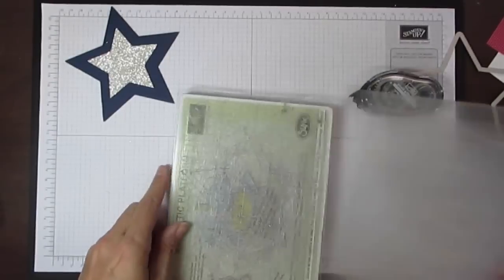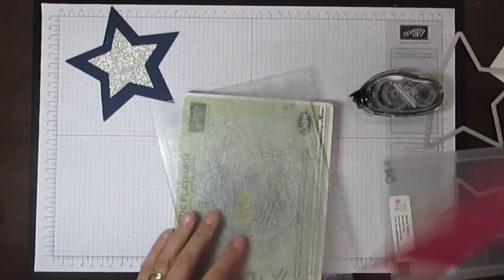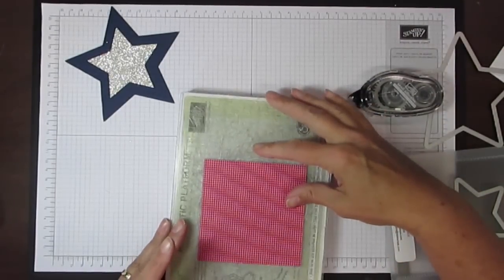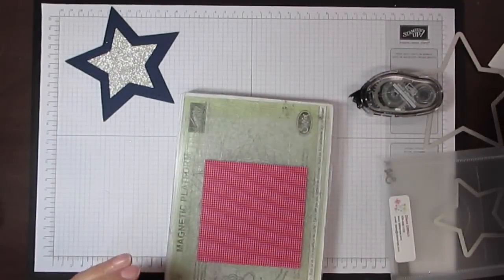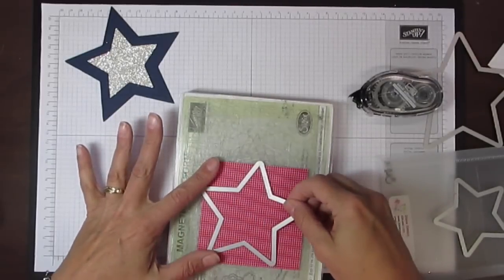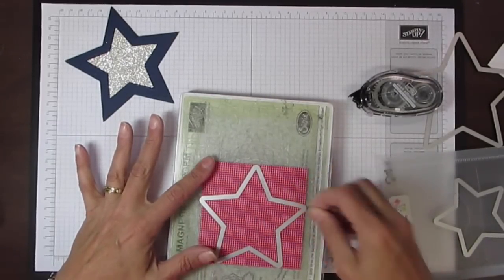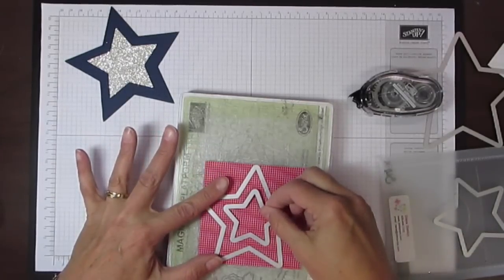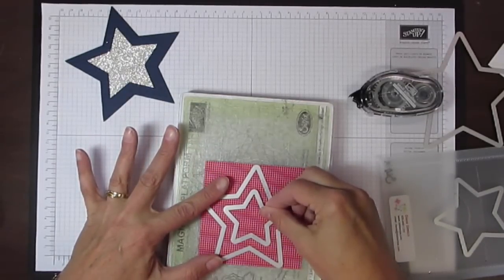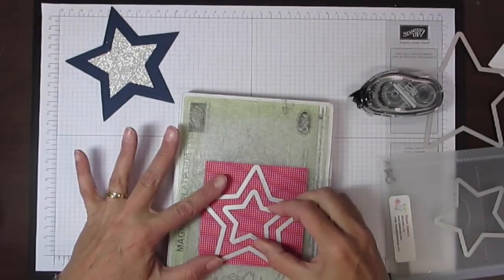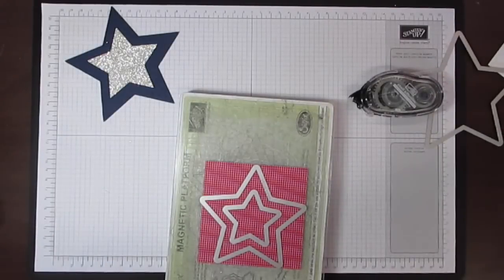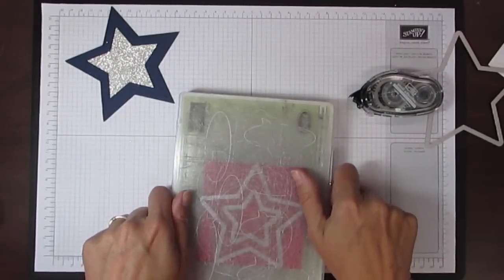The next thing I'm going to do is come back in with my magnetic plate, and this time I'm using a piece of designer series paper and the second to the largest star and the second to the smallest star. I'm just going to line those up on there, and it's easy with the magnetic plate because it's not moving, it's not going anywhere, and then run this through the big shot.